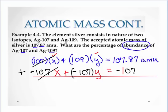And 107x minus 107x cancels. 109 minus 107 is 2y. And then I get 0.87. Now to solve that for y, I divide both sides by 2.